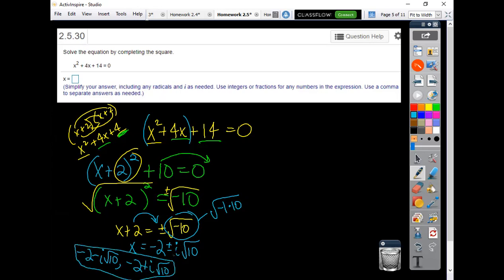Should get everything the same using the other method. Unless I made a mistake, that's always a possibility. But how does the other method go? x squared plus 4x, I'm going to already move the 14 to the other side. So I've already done that step.